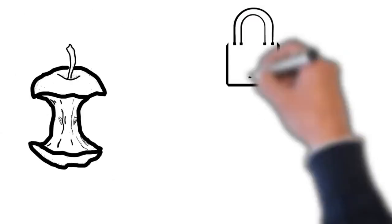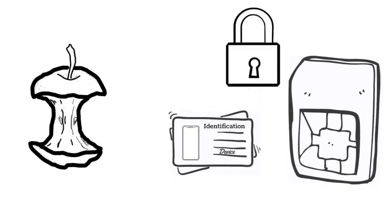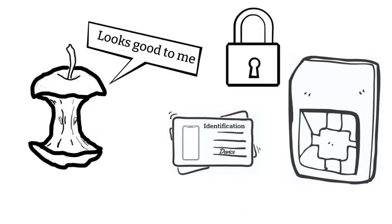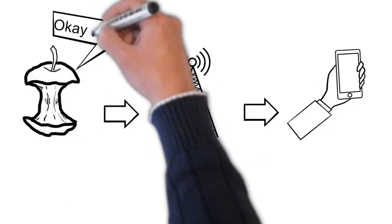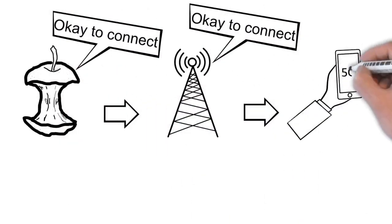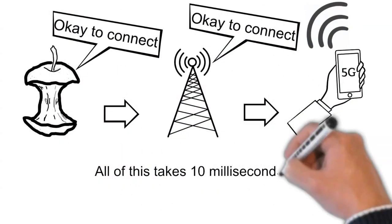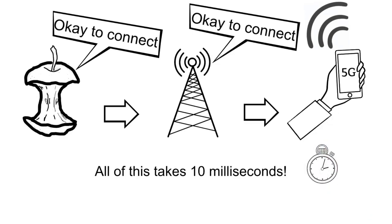The core runs security and identification checks to confirm you are who you say you are and whether you have enough credit or data to fulfill the request. If all is well, the network sends a message back to the mast saying it's okay to connect, which in turn provides signal for the device. And all of this happens in around 10 milliseconds.